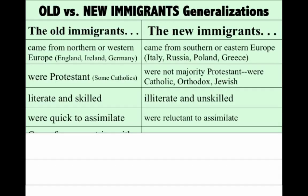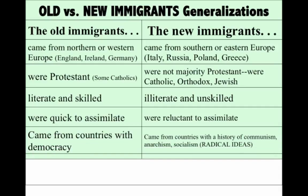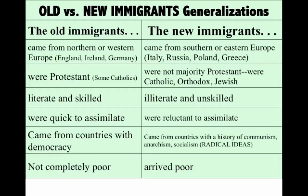There was a perception that the old immigrants were quick to assimilate, whereas these new immigrants were reluctant — very clannish, they stuck to themselves. The old immigrants came from countries with a tradition of democratic principles, whereas there was a perception that these new immigrants were coming from areas with a history of radical ideas like communism, anarchism, or socialism. The old immigrants, especially Germans and British, tended not to be completely poor — many were middle class — whereas these new immigrants arrived largely poor.